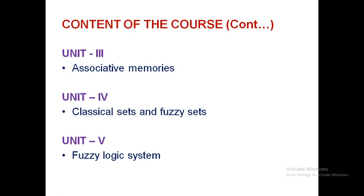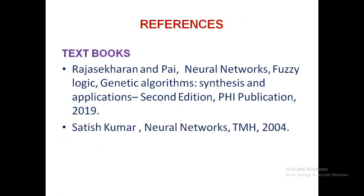Coming to the references, the first textbook is Neural Networks, Fuzzy Logic, Genetic Algorithms: Synthesis and Applications by Rajasekaran and Pai. This is a good textbook available online. Almost all of the syllabus content can be found in this book, any edition. The second textbook is Neural Networks by Satish Kumar, TMH 2004 edition.